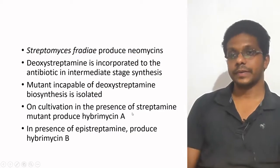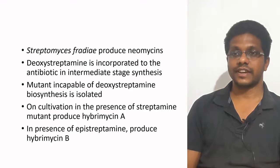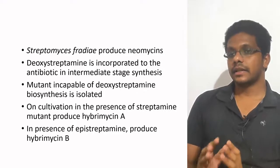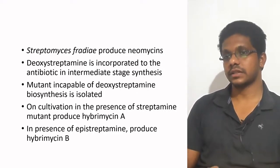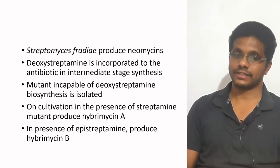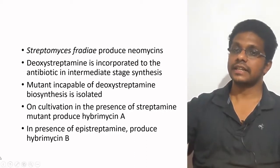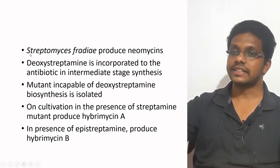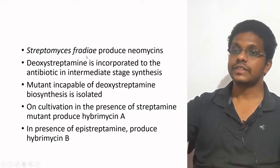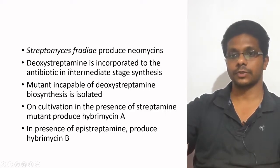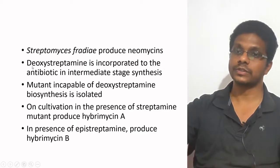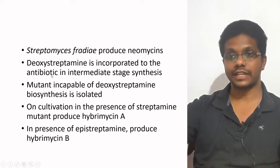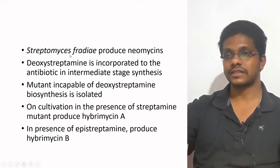I will give you an example. This example is for Streptomyces fradiae, which produces the antibiotic called neomycin. In the ordinary natural pathway, they are producing neomycin, and one of the intermediate steps requires D-oxystreptamine as a precursor. So what we do is isolate a strain of Streptomyces fradiae which is defective for the production of D-oxystreptamine. This particular mutant is not producing D-oxystreptamine, so it cannot produce neomycin. We now have a mutation creating a defective metabolic pathway in Streptomyces fradiae.